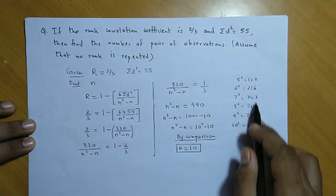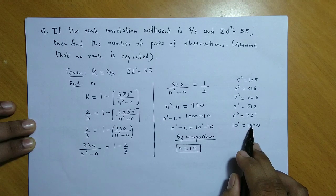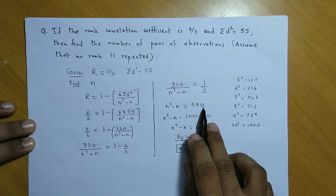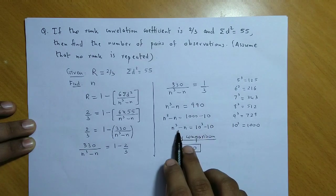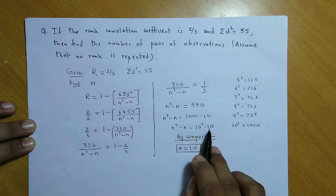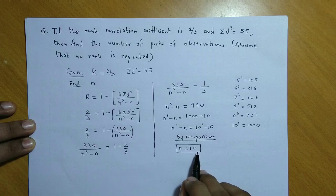990 is close to the perfect cube that is 10 cube which is 1000. So, 990 ko ab express kijiye as 1000 minus 10, ya phir 10 cube minus 10. So, agar aap both taraf compare karein, so aapko comparison se hi ye value mil jayegi which is 10.